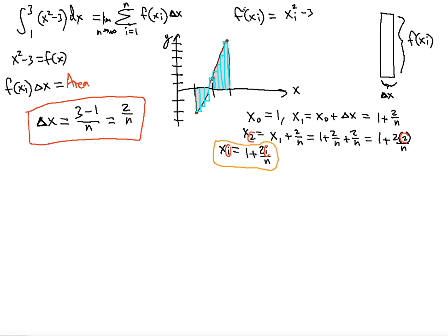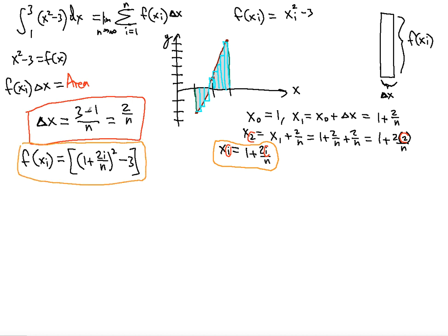The function f(xᵢ) is going to be xᵢ squared minus 3. So that means we substitute: (1 plus 2i/n) squared minus 3. This serves as the length of each rectangle, and the width is of course 2 divided by n. I can indicate these components for the area — the width and the length.